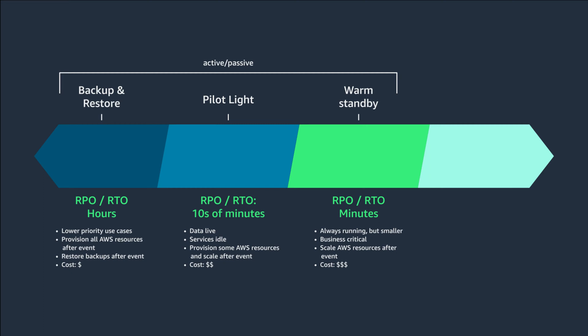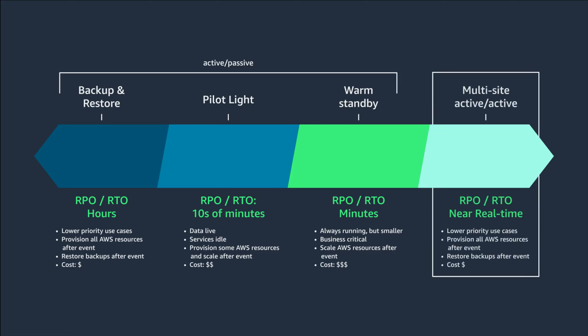What is an active-active failover strategy? A multi-site active-active failover strategy gives you the lowest possible RTO and RPO. Simply put, this design has two systems in an active state, serving traffic at any point of time, such that even if one of them goes down, the other takes over.